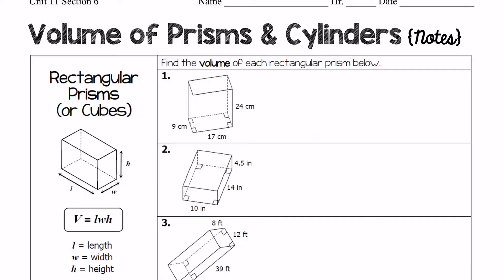Okay, Unit 11, Section 6. Now we're going to be getting into volume, and so this first section of volume is just prisms and cylinders.